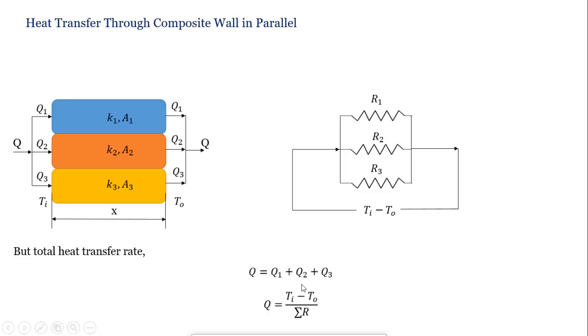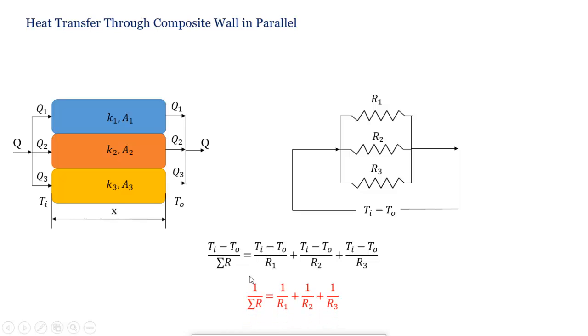So we put the Q value, Q1 value, Q2 value and Q3 value in this equation. That will give us Ti minus To upon Sigma R equal to Ti minus To upon R1 plus Ti minus To upon R2 plus Ti minus To upon R3. This Ti and all Ti get common and get cancelled. So our final equation becomes 1 upon Sigma R equal to 1 upon R1 plus 1 upon R2 plus 1 upon R3.